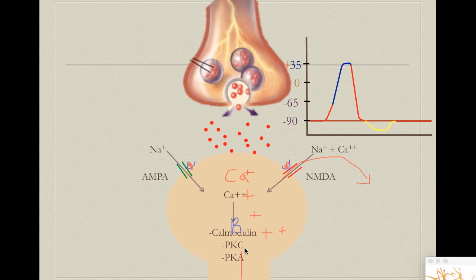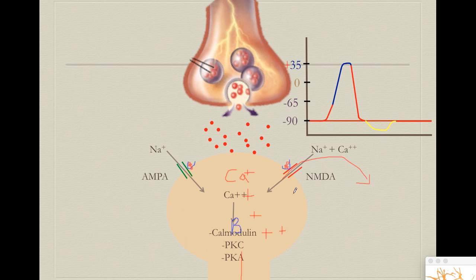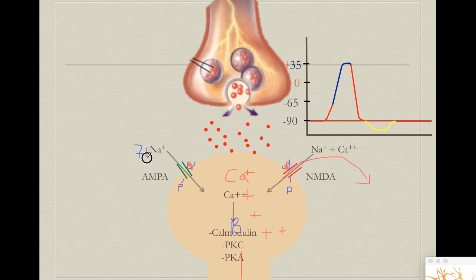The main changes we can expect after calcium entry include activation of a protein called calmodulin, and protein kinases — Protein Kinase C (PKC) and Protein Kinase A (PKA). These protein kinases grab all the proteins of our cell and start adhering phosphate groups to them. So if I activate my NMDA receptor and calcium flows in, calcium activates calmodulin, PKC, and PKA, which add phosphate groups throughout the cell.